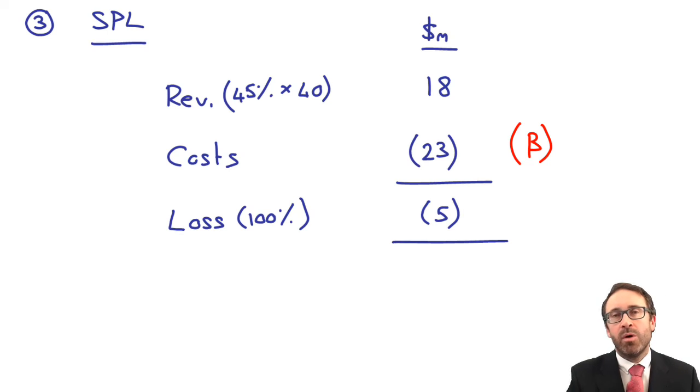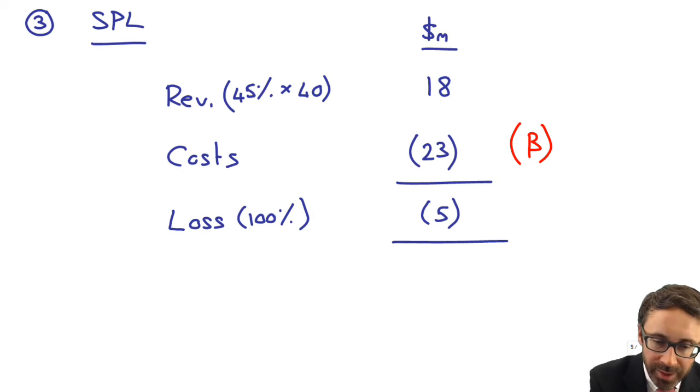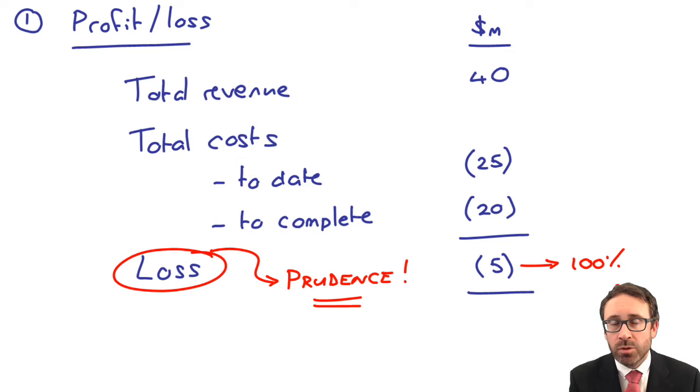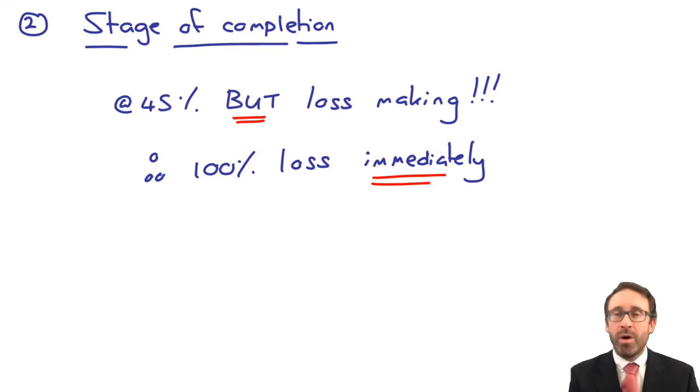So, that's the figures that would then appear in your statement of profit or loss. The revenue of 18 will get added to whatever other revenue figures that there may be. And the costs get included within cost of sales alongside all the other costs that there may be within the question. The key bit is that as soon as you identify a loss, you go in there and recognize 100% of that loss.